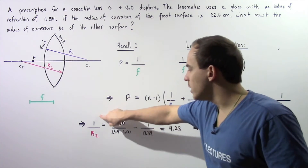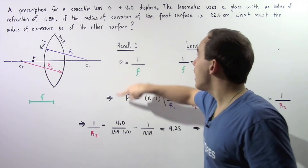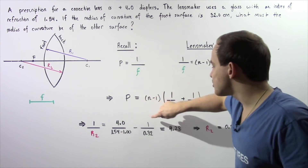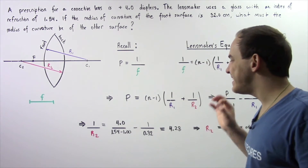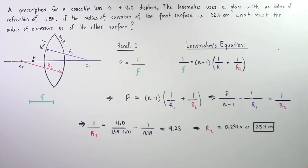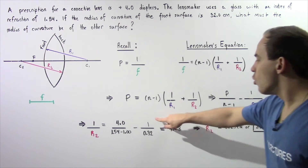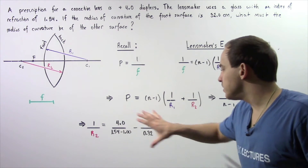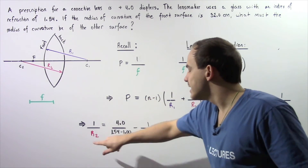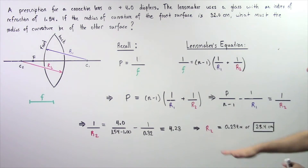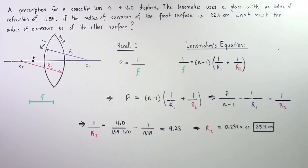Let's plug in our values. 1 divided by R2 equals our power, positive 4, divided by (N minus 1), which is 1.54 minus 1, minus 1 divided by R1. Since the power is given in diopters and diopters are related to meters, we must give this quantity in meters — so 32 centimeters becomes 0.32 meters. Plugging these values into our calculator, 1 divided by R2 equals 4.28. Solving for R2, we get R2 equals approximately 0.234 meters, or equivalently 23.4 centimeters.